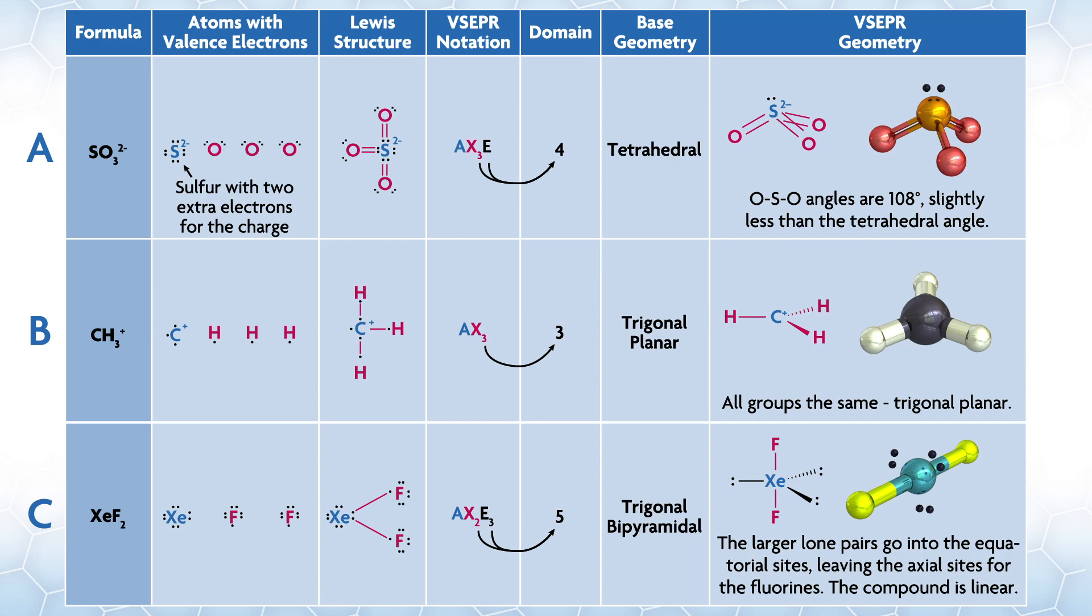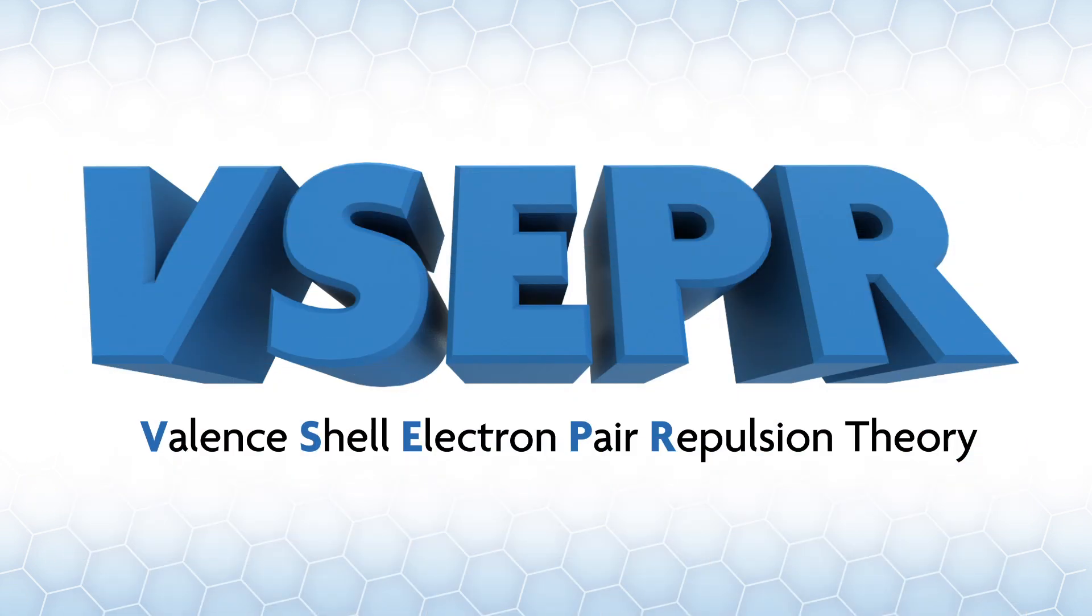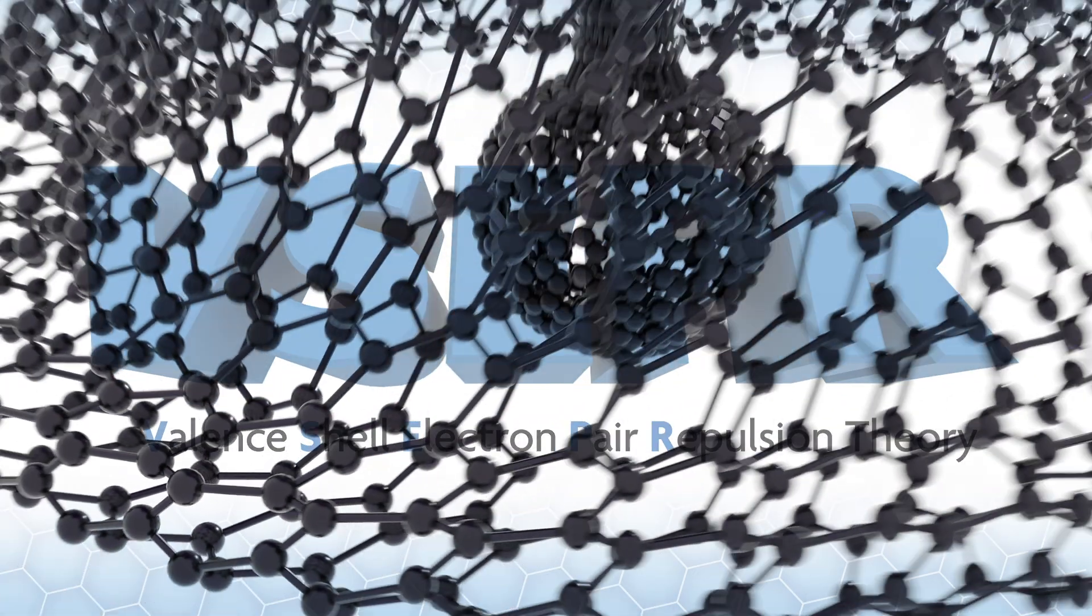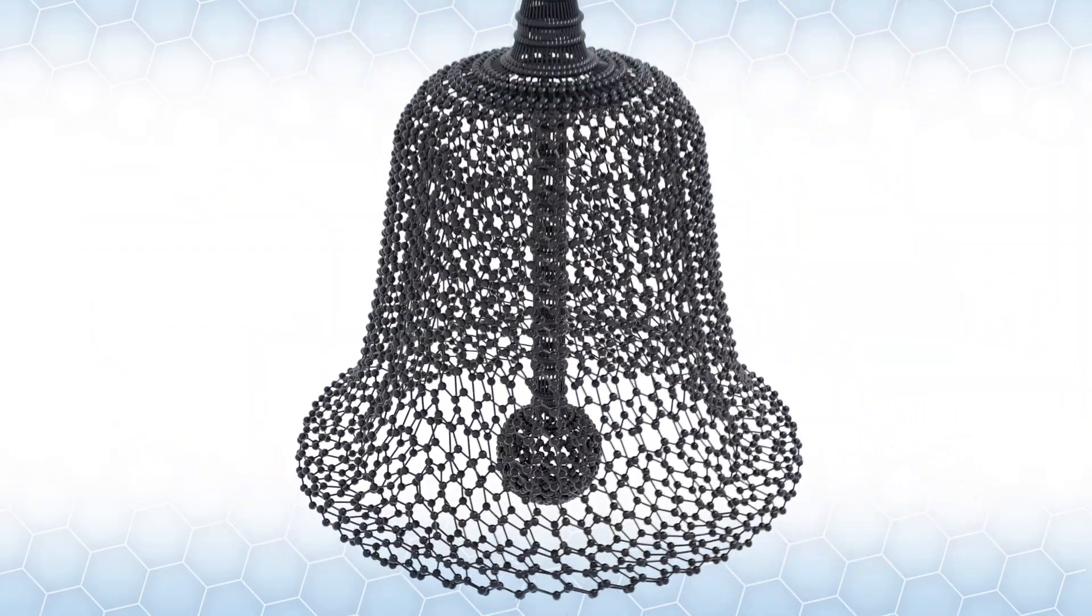So the base structure is trigonal bipyramidal. The larger lone pairs go into the equatorial sites, leaving the axial sites for the fluorines. As a result, the compound is linear. That's Valence Shell Electron Pair Repulsion theory, the most important tool we have for guessing the 3D structure of molecules, or at least making an initial guess. With a little practice, finding these structures becomes second nature.